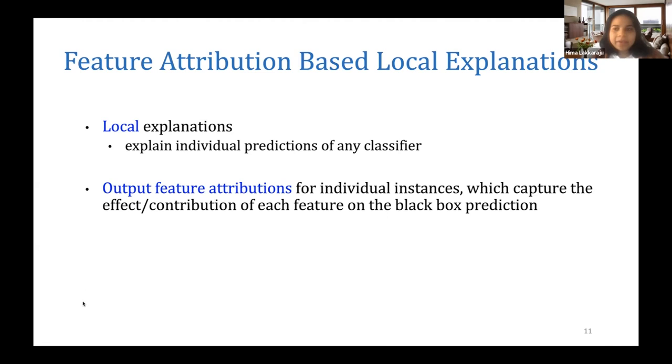Now this category of methods - feature attribution based local explanation methods - essentially output feature importances or feature attributions for individual instances. What we mean is, with each feature they associate some kind of importance value that captures the effect or contribution of that feature on that singular prediction. Because as we were just discussing, we are focusing on explaining just one singular prediction with these methods.